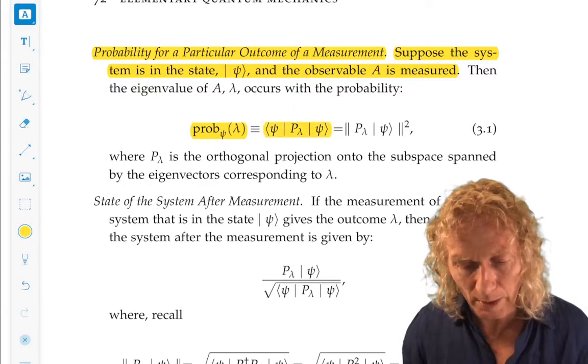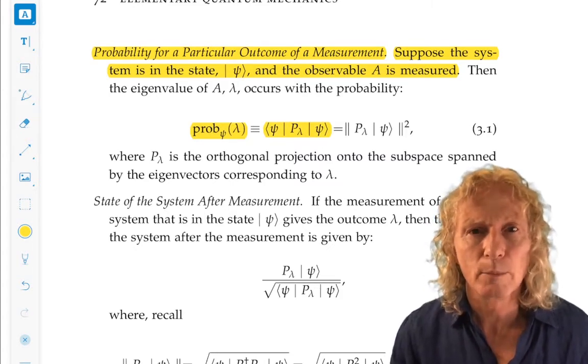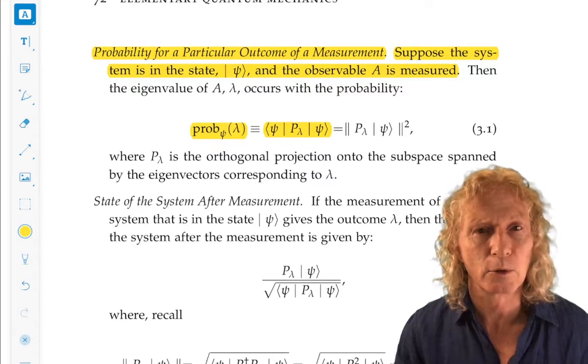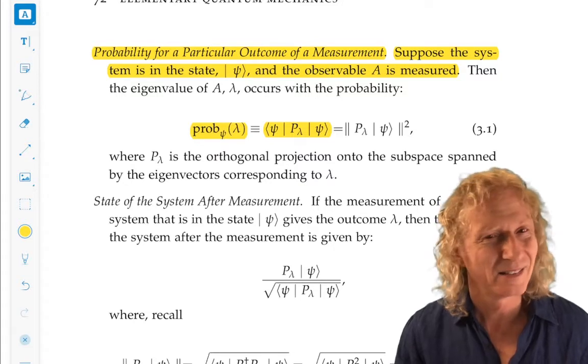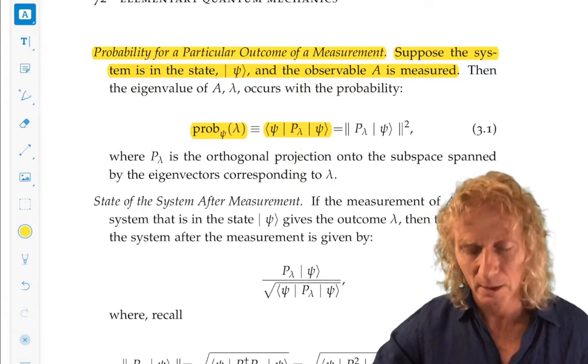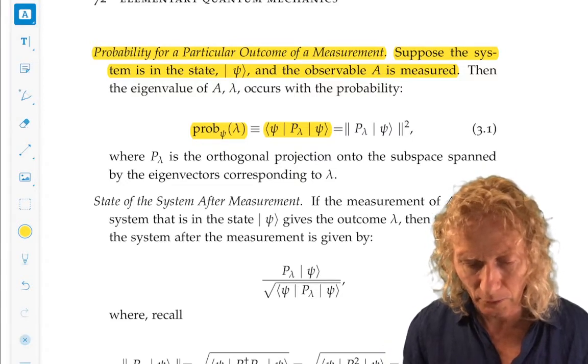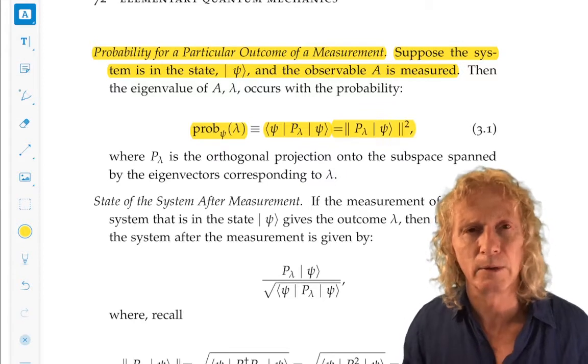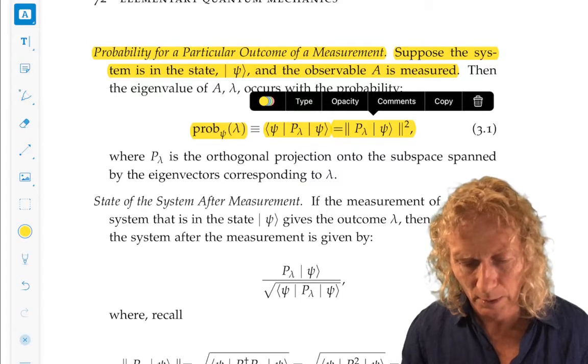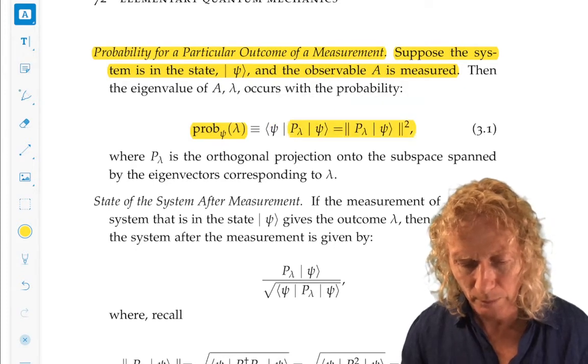It's the expectation value of this operator P_lambda, which is the orthogonal projection onto the subspace spanned by the eigenvectors corresponding to A. That sounds like it's going to be difficult and abstract, but based on what we've already done, this is going to be fairly easy, at least in the situations we look at, to find P_lambda. And this also has this expression. You should verify to yourselves this last equality between these two expressions.